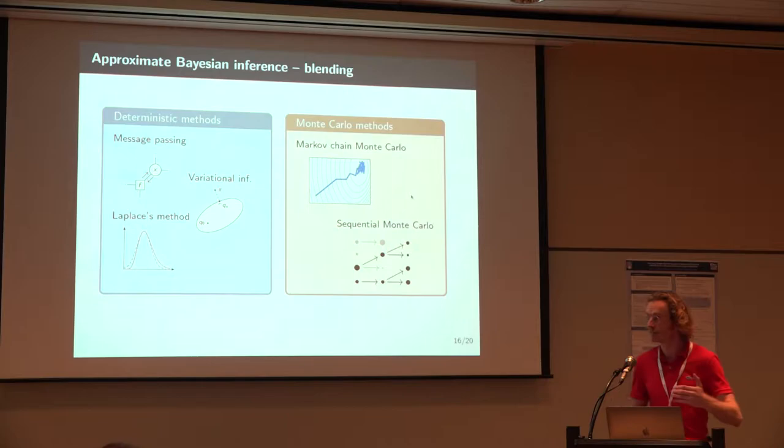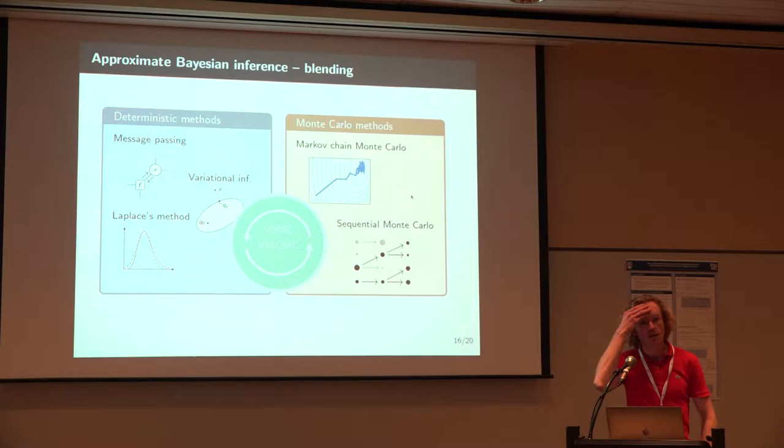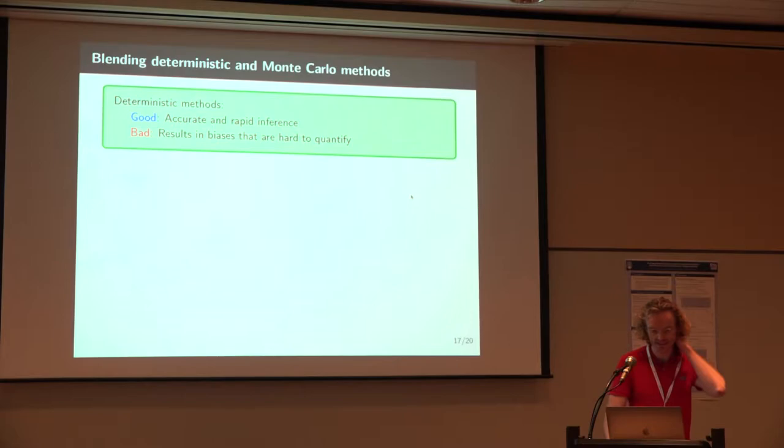Let me just finish by pointing to some more recent work on this blending business. So on the left-hand side, you have deterministic methods, like message passing, like variational inference, like Laplace method. And then on the other hand, you have stochastic methods, or Monte Carlo methods, like MCMC or SMC that we've been talking about. I think we should really be doing more of this, where we use a bit of both. It's not one or the other. This deserves to be thinking hard about, how can we combine both of them in a good way? And you can also stay within Monte Carlo, and you can combine SMC with MCMC. Or you can combine SMC with itself.